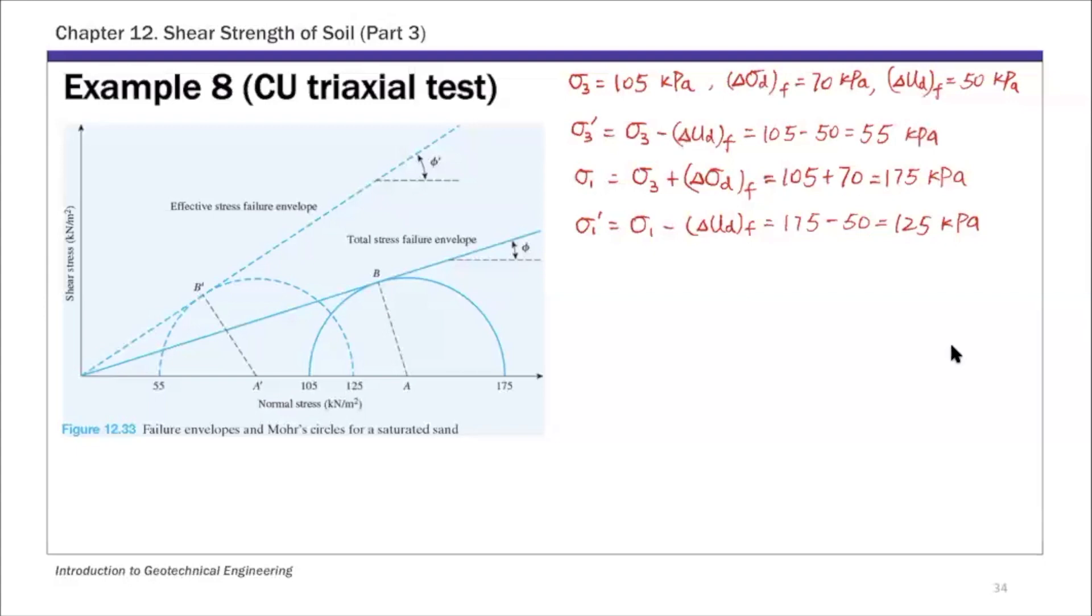Once we have all these principal stress values, the rest is basically just plug into the equation. I already showed how you obtain these two equations using the two right triangles. That's equation 12.36 and 12.37. For part a, we're looking for phi.